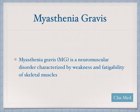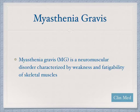Myasthenia gravis is a neuromuscular disorder characterized by weakness and fatigability of skeletal muscles. That is the hallmark definition of this condition — the weakness and fatigability.